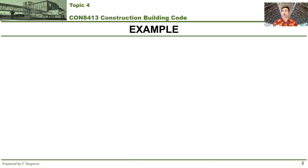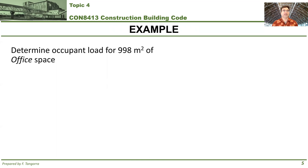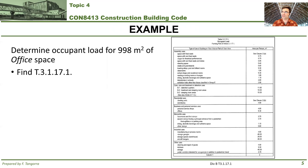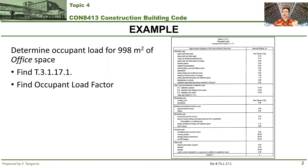I think the best way to figure out how to do occupancy loads is by doing it - let's learn by doing. I'm going to put up an example here which is very similar to the one in your course notes; I've just changed the area. Determine the occupant load for 998 square meters of office space. The first thing we do is go find table 3.1.17.1. Occupant load should look something like this. Then within this table, we have to find the appropriate occupant load factor for the major occupancy in this case.